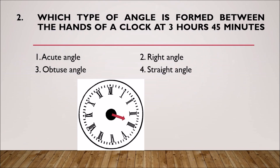Here we have the clock again. The hour hand is at 3 and the minute hand is at 45 minutes. The angle formed by the two hands is an obtuse angle.